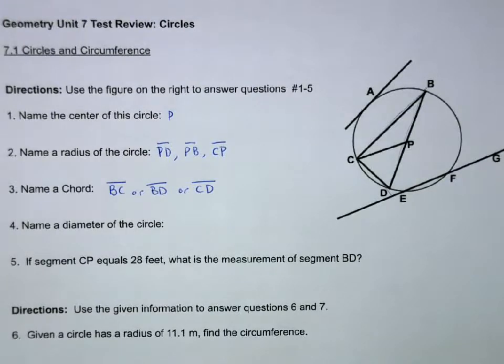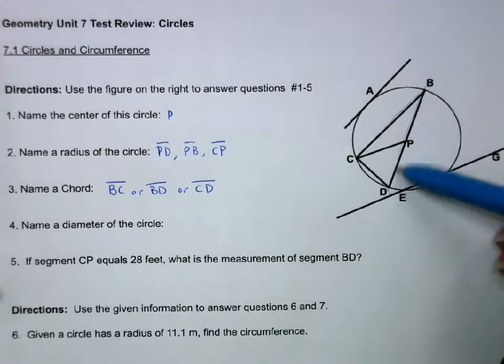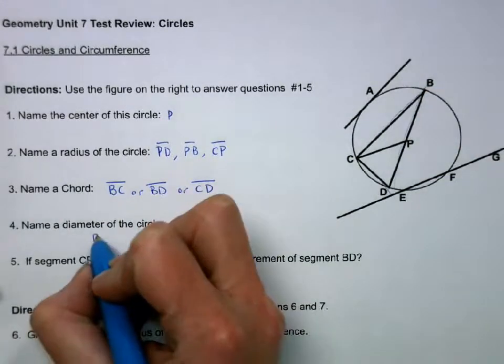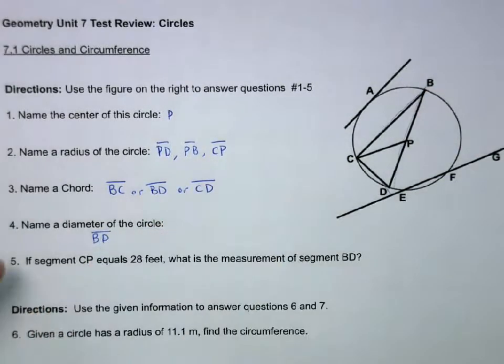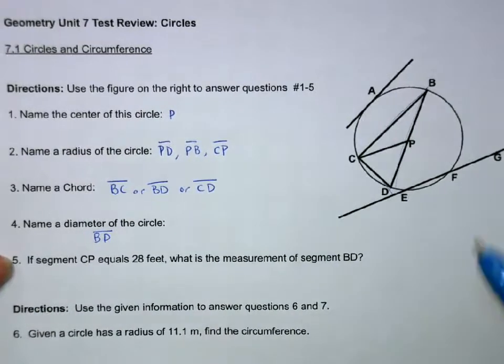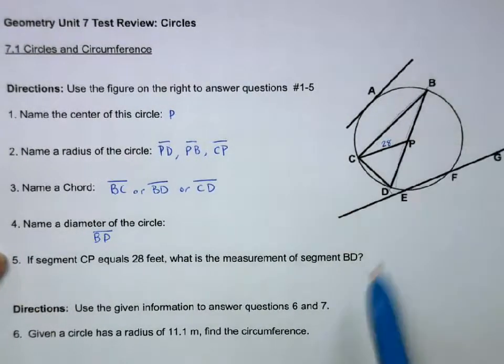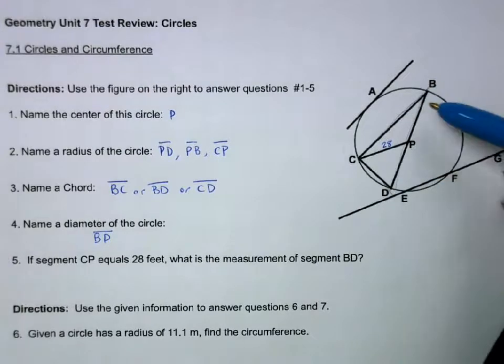And last, a diameter. So the diameter, there's only one drawn here, and that's going to be BD. For question five here, if segment CP, if this is 28, what is the measurement of BD?